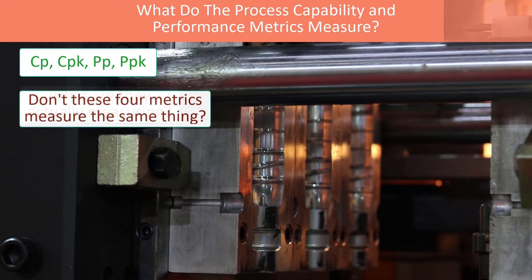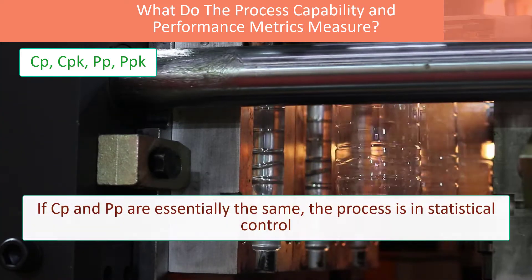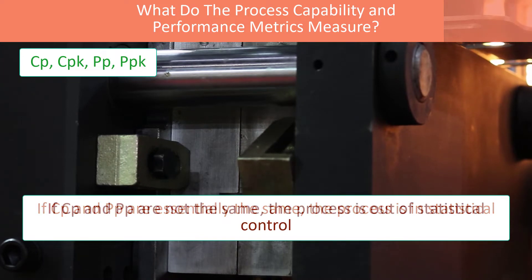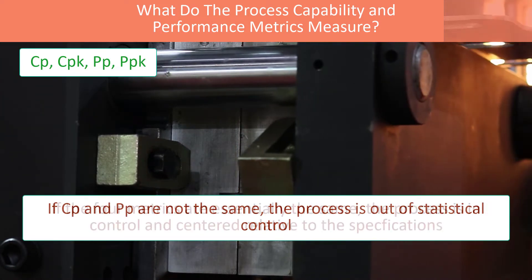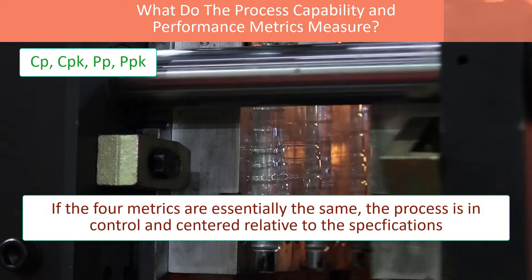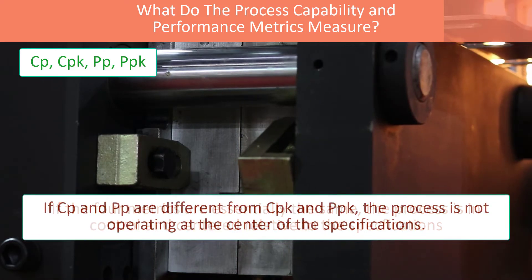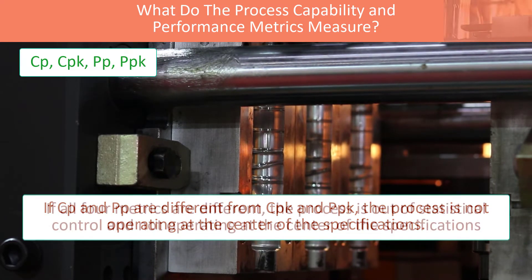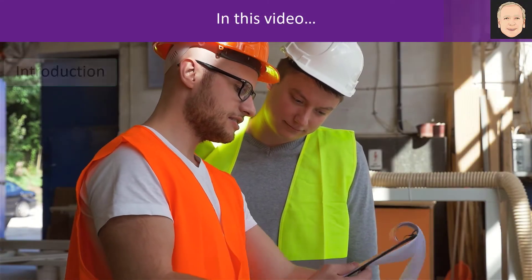Are they measuring the same thing? No, they're not. In fact, those values will give you insights into statistical control and process centering. If CP and PP are essentially the same, your process is in statistical control. If they're different, your process is out of control. If all four are the same, your process is in control and centered relative to the specification. But if CP and PP are different than CPK and PPK, the process isn't operating at the center of specification. If they're all four different, you're out of control and not centered.